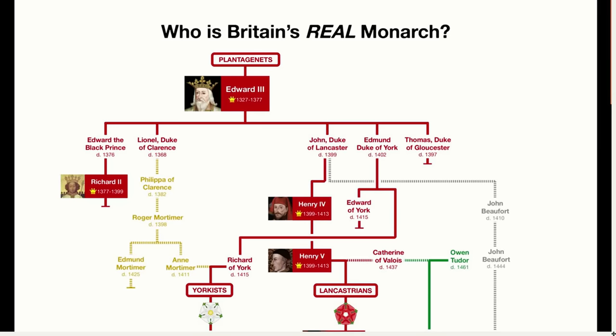Today I'm going to discuss a theory that was made popular in the 2004 documentary Britain's Real Monarch. The documentary was hosted by actor Tony Robinson, best known for playing Baldrick in Blackadder. In it, he argues that the current queen is not the legitimate monarch and that the rightful monarch is actually a rather ordinary guy living in Australia. I'm going to show you some family trees to explain the theory and then give you my opinion on it.